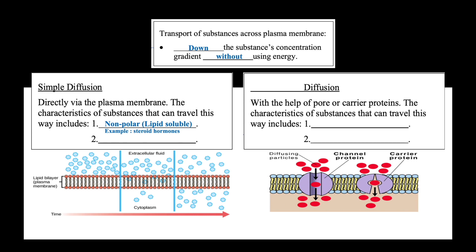If the substance is very small in size, they can also travel this way. This includes water and gases such as oxygen and carbon dioxide. If the substance is too big, or they are charged or polar molecules, they will require the help of a transport protein to be transported across the plasma membrane.